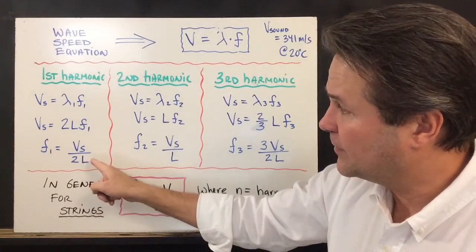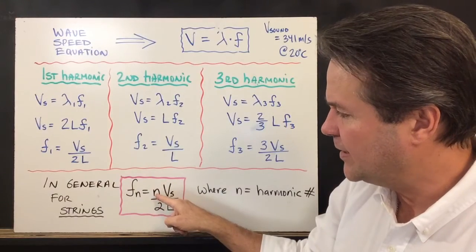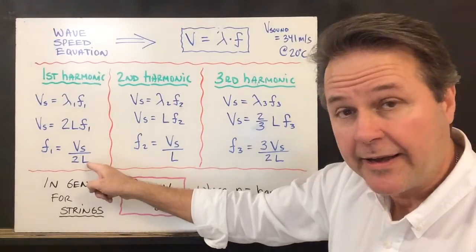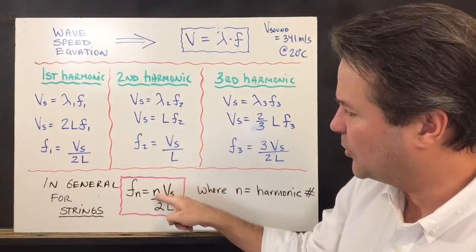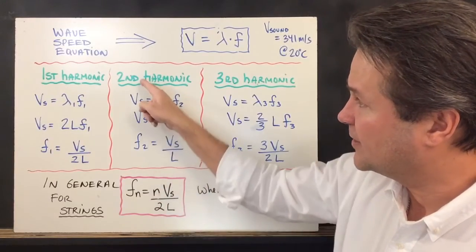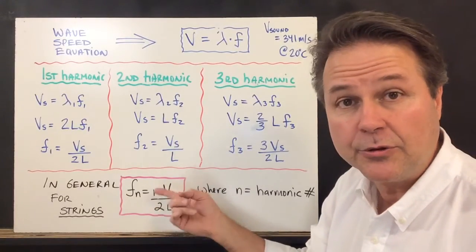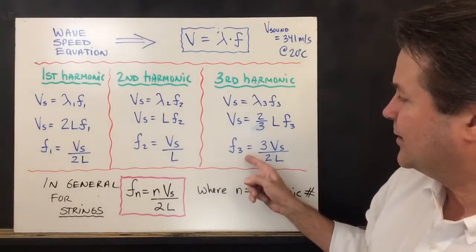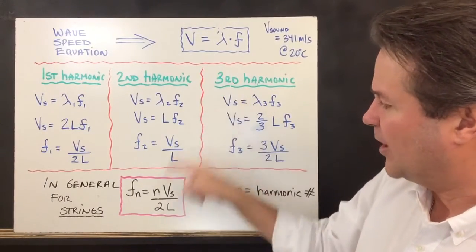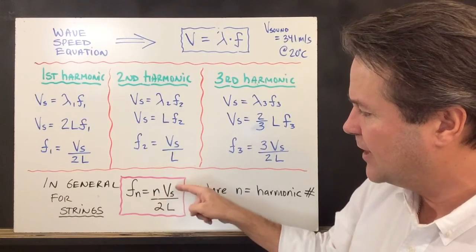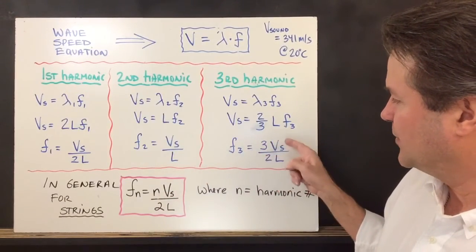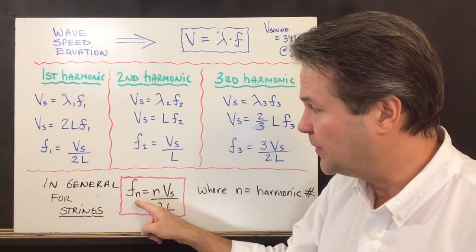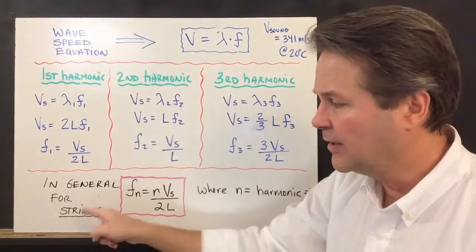For the general formula, for the first harmonic we put n=1, giving us one-half times v_s divided by L. For the second harmonic, n=2, giving 2 over 2 times v_s over L, which equals 1 times v_s over L. For the third harmonic, n=3, giving three-halves times v_s divided by L. So you can use this general formula to determine the frequency of any harmonic on a string.